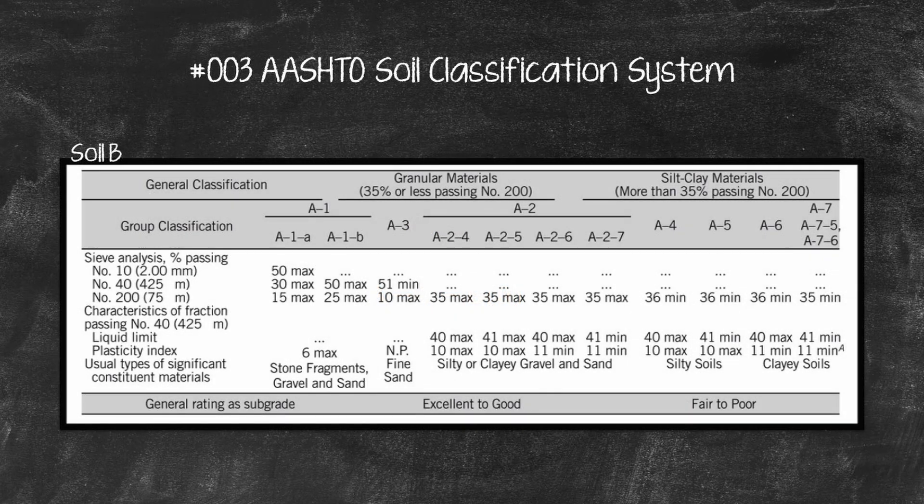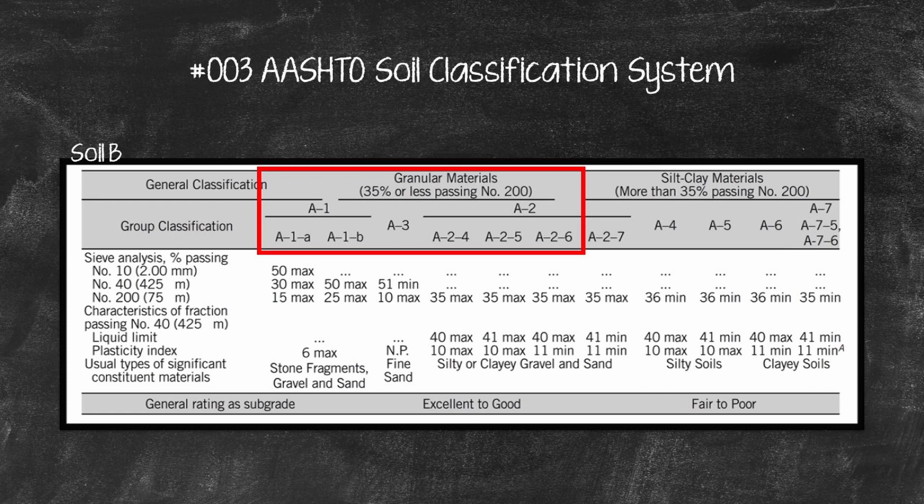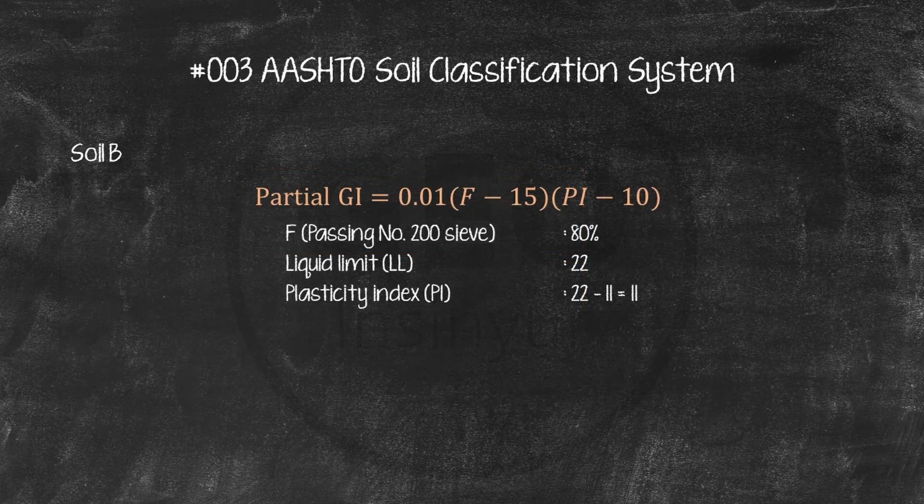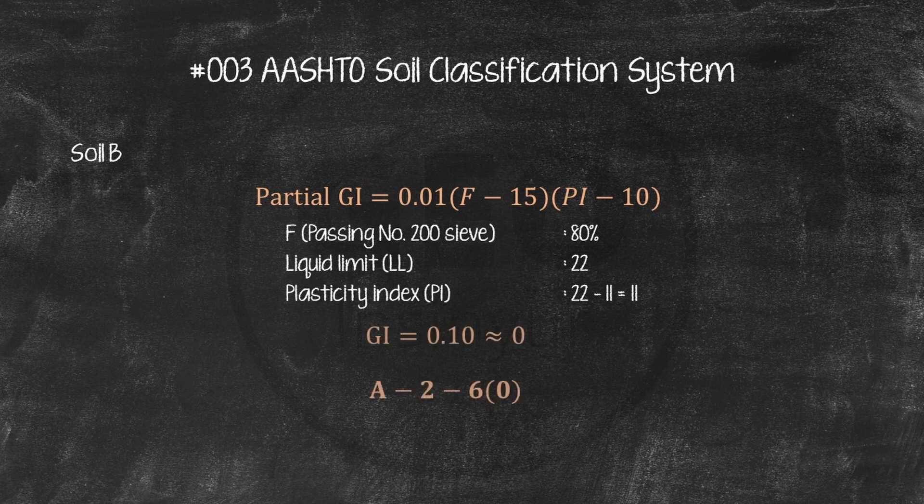Sample B. The percent passing the 200 sieve, 25%, is less than 35%, cohesionless soil. LL equals 22, PI equals 11, larger than 6. This must be an A2 soil. Beginning with A24, compare the sample results with the table criteria, to obtain A26. For groups A26 and A27 use partial GI, so PGI equals 0.10, reported as zero. Classification is A260.